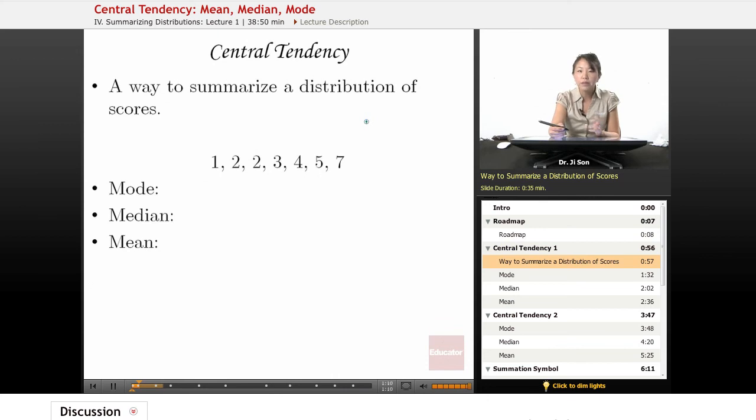But shape is just one dimension that you could summarize a distribution on, a way that you could describe it. Central tendency is another dimension that you could describe it on.